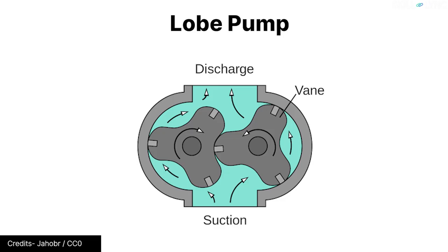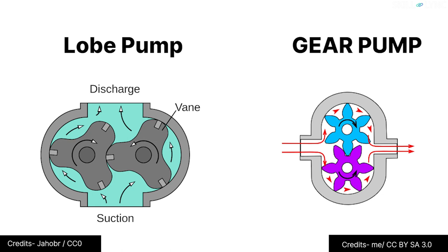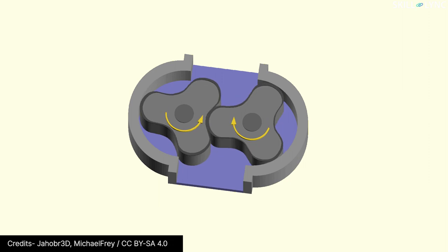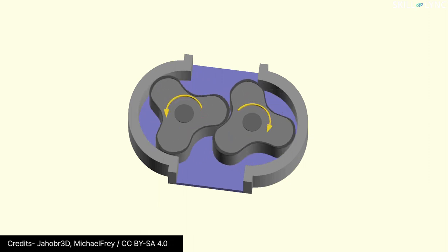Lobe pumps are similar to the external gear pumps in the way they work. Similar to how we have two gears which rotate and pump the fluid, lobe pumps have two lobes. The two lobes rotate in opposite directions to pump the fluid.